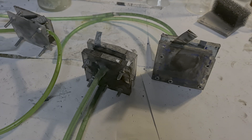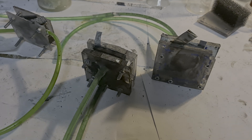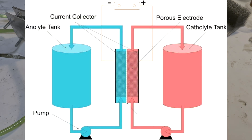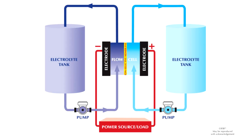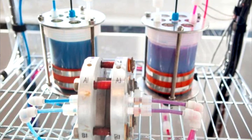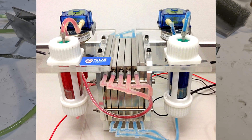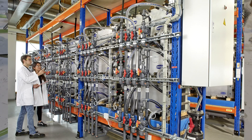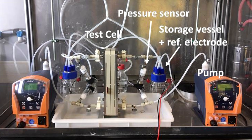Hello everybody! In this video I will talk about flow batteries — more exactly, semi-flow batteries. The difference between a semi-flow battery and an ordinary flow battery is in the construction design. An ordinary flow battery uses two external electrolyte tanks with two pumps: one tank for the positive side electrolyte and one for the negative side, each connected to a pump.